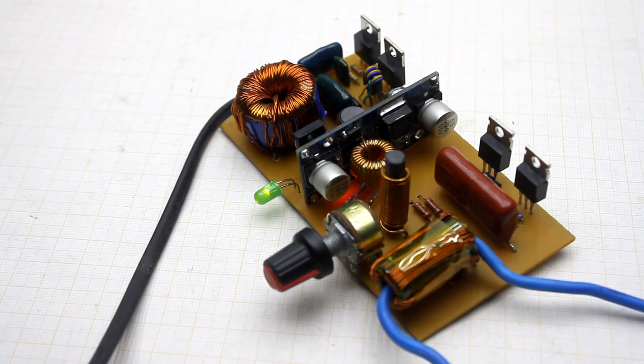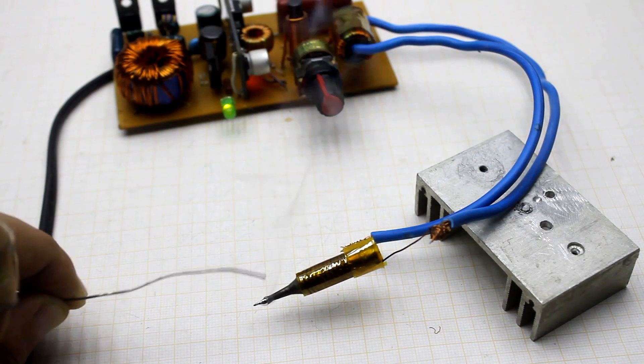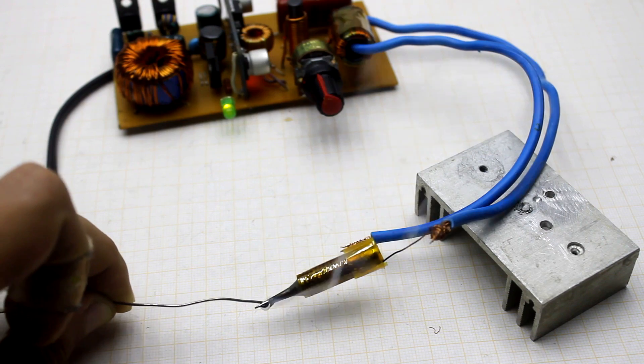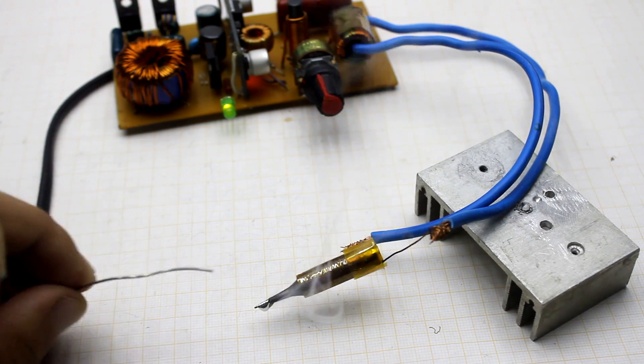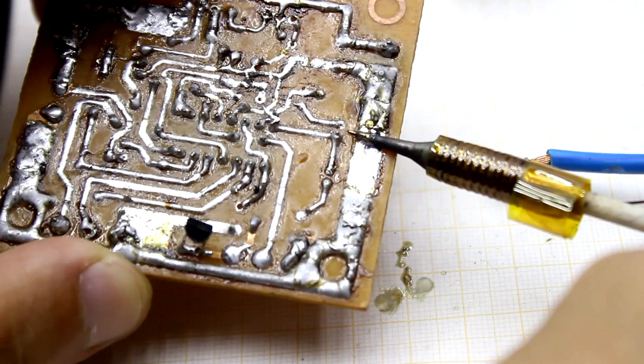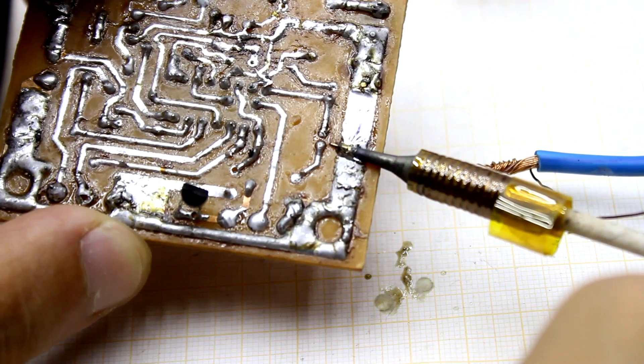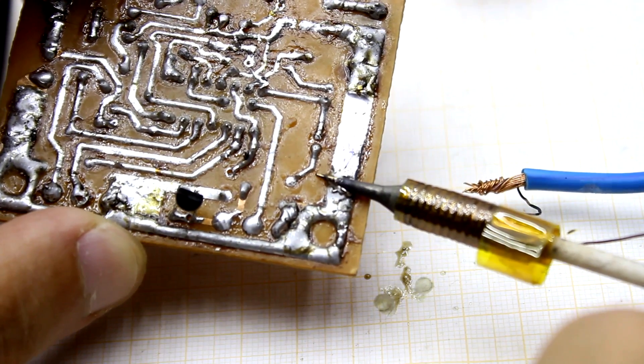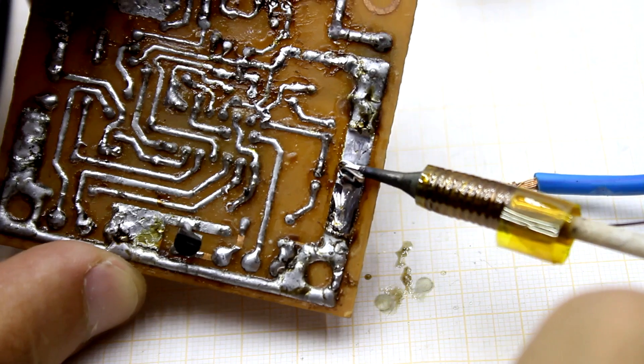It sounds strange, but during the work, on the board, almost nothing heats up, since all components are with multiple reserves. But I advise anyway to install transistors of the power supply and the generator on small radiators. If using one common radiator, all transistors should be isolated from it.